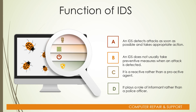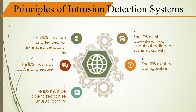Functions of IDS: IDS detects attacks as soon as possible and takes appropriate action, or reports to the administrator. IDS does not usually take preventive measures when an attack is detected — it is a reactive rather than proactive agent, playing the role of a fire alarm rather than a police officer. Principles of IDS: IDS must run unattended for extended periods, operate without unduly affecting system activity, stay active and secure, be able to recognize unusual activity, and must be configurable.